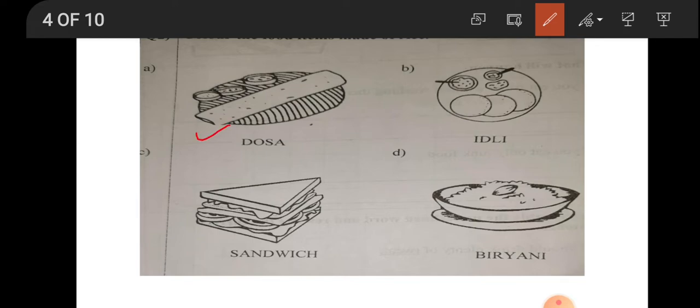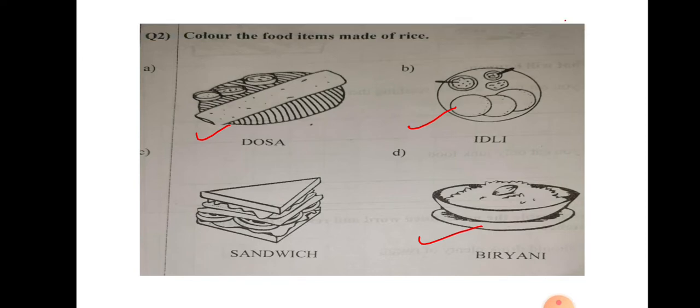So you have to colour dosa. Then you have to colour idli. You know dosa and idli are made up of rice and dal. Which dal? That is urad dal. You can tell mama to show you. She soaks it in the water for the whole night. Next morning she grinds it. Then whole day she keeps it for fermentation. And then evening she makes dosa and idli. Dosa and idli are made up of rice and even the biryani, that is your pulao. It is made up of vegetable biryani. Biryani is made up of rice only. So please colour all these 3 food items.